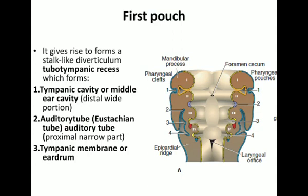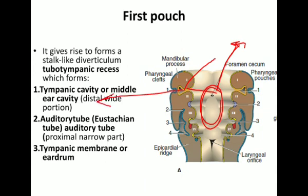The first pharyngeal pouch or first endodermal pouch forms a diverticulum shown in yellow. This diverticulum has a proximal narrow part and a distal dilated part. The proximal narrow part will form the auditory tube, which opens into the pharynx. The distal dilated part will form the tympanic cavity or the middle ear cavity. The distal most part or base will form the tympanic membrane or ear drum.